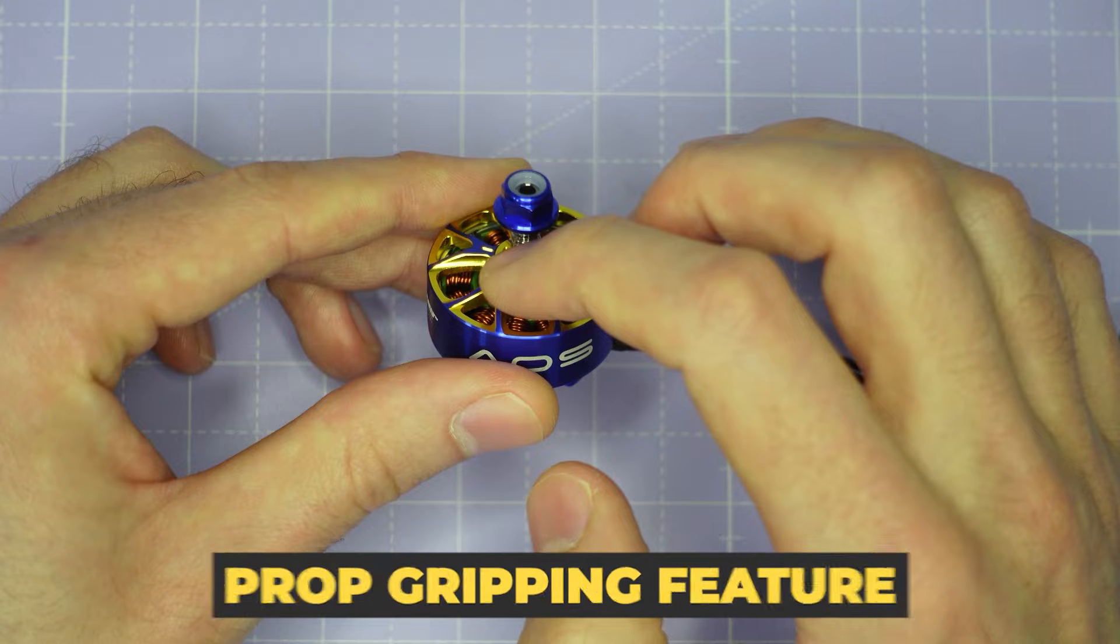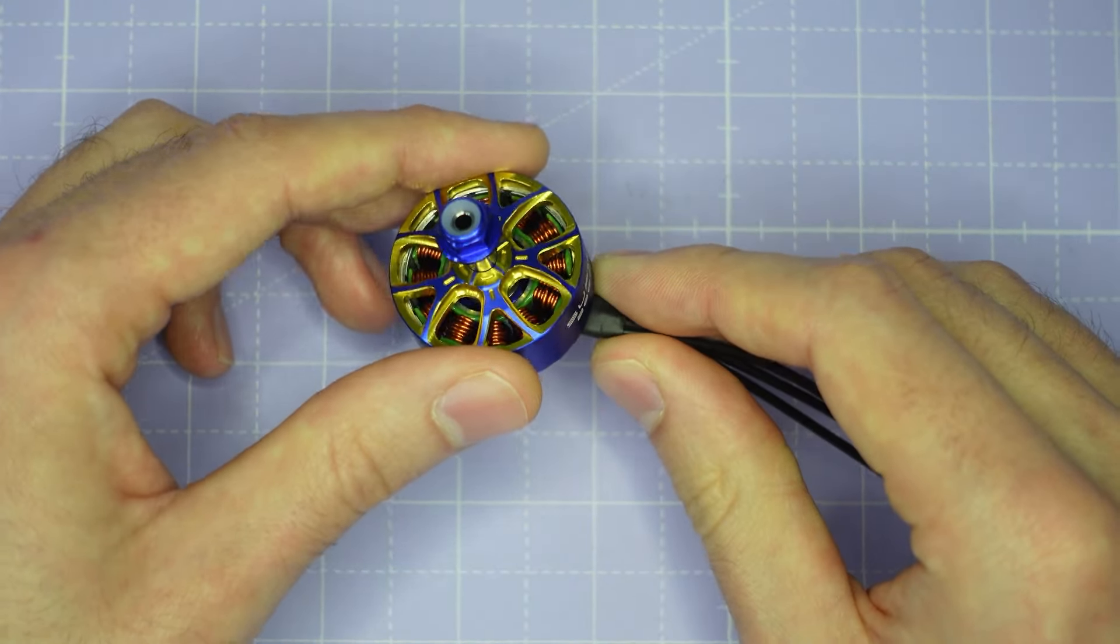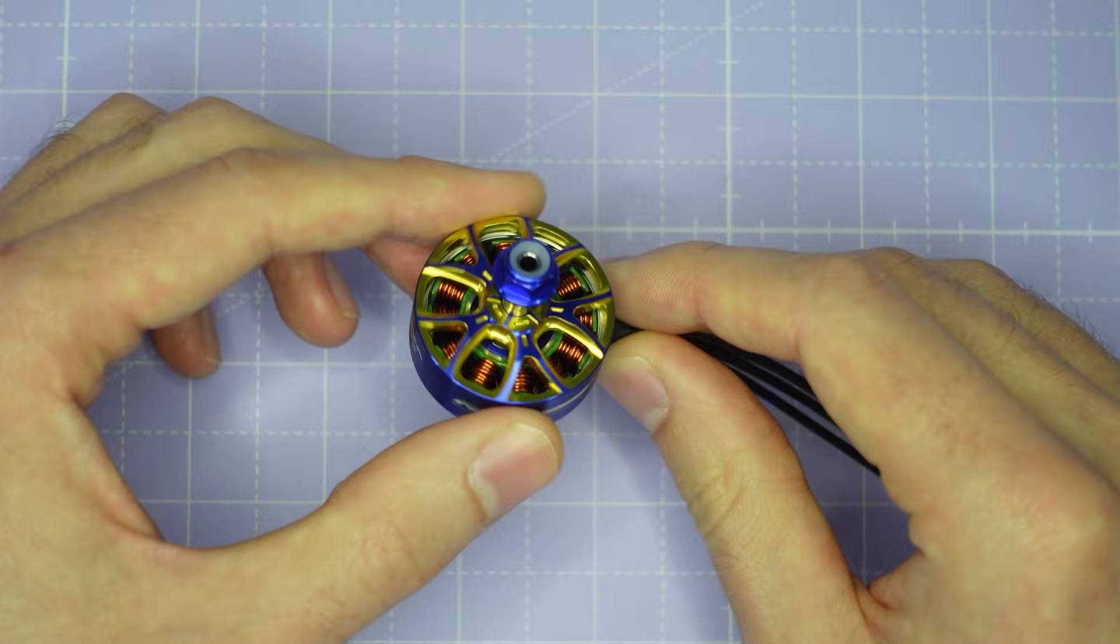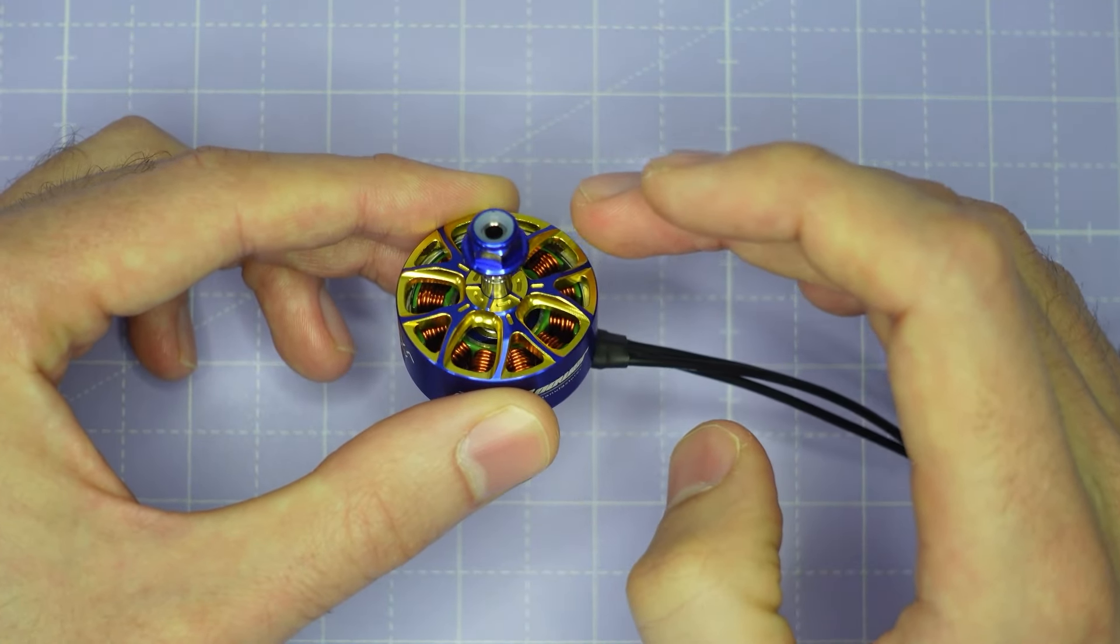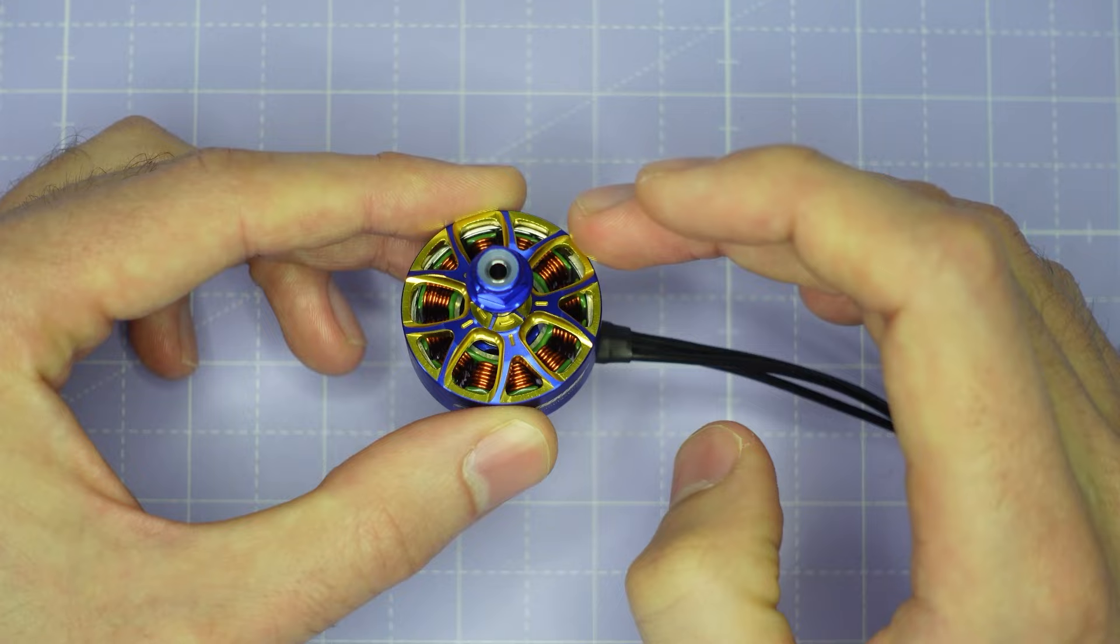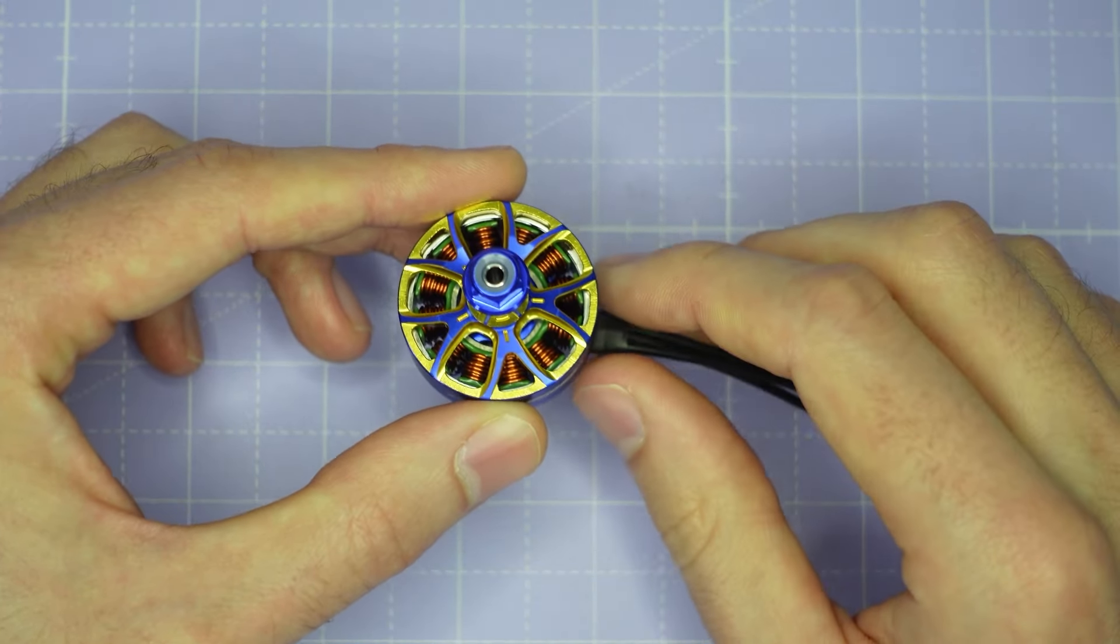We have a prop gripping feature machined into the top, and if you look around the edge of the motor, you may be able to see evidence of balancing compound. So this means that RC and Power have individually balanced every single motor to make sure that it produces the minimum possible amount of vibration when it spins.